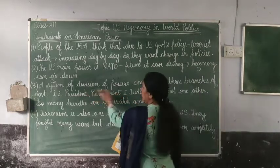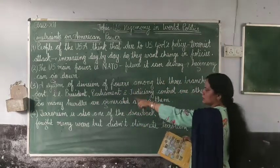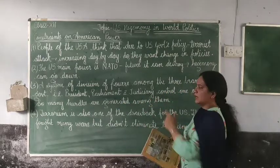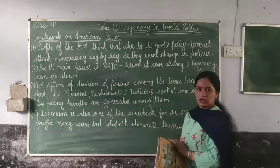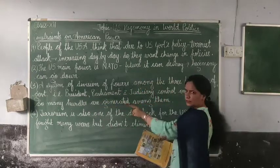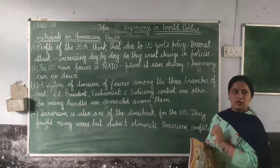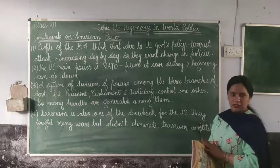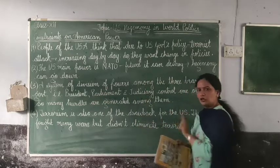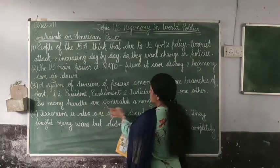Second is a system that was divided into three powers in the US. First power was the President, second was Parliament, and the third one was Judiciary. If the President wants to take a certain action, the Parliament can challenge it. If the Judiciary says that they cannot invade any country, those plans get cancelled because decisions require agreement across all three powers, so many hurdles are generated.